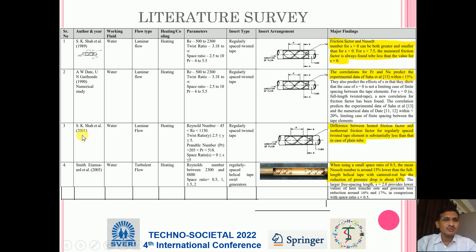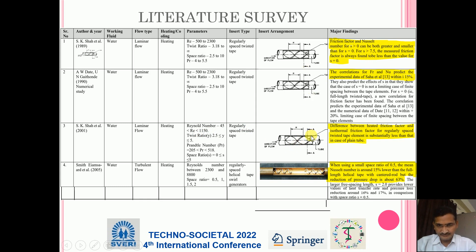Another work from 2001, paper written by S.K. Shah — working fluid is water, flow type is laminar, used for heating application, Reynolds number range is 45 to 1150. Regularly spaced twisted tip is used and the insert arrangement is similar to what we have seen previously. The major finding is that the difference between the heated friction factor and isothermal friction factor for regularly spaced twisted tip element is substantially less than that in the case of a plain tube.